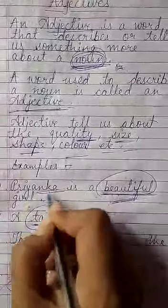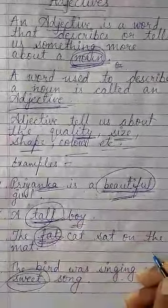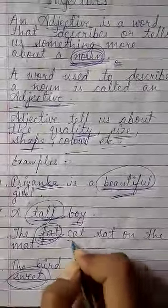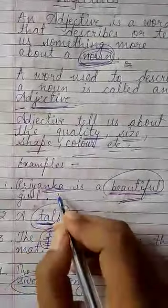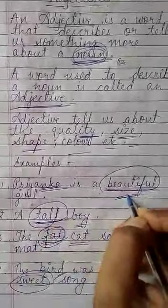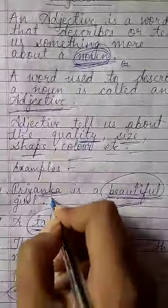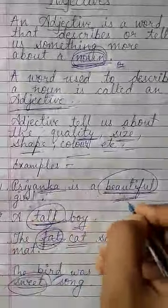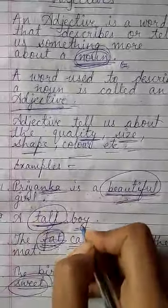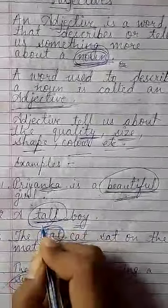The nouns are: Priyanka, boy, cat, and bird. Priyanka is a noun and 'beautiful' is the adjective. Jo noun ko describe karta hai — adjective kya hota hai? Jo noun ke baare mein hame batata hai ki noun kaisa hai. Toh Priyanka noun hai, or 'beautiful' adjective hai, jo bata raha hai ki Priyanka kaisi hai — beautiful girl hai. Boy noun hai, or 'tall' jo hai woh adjective hai.